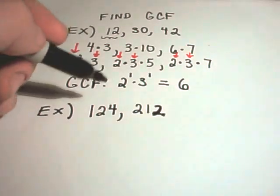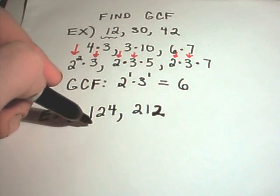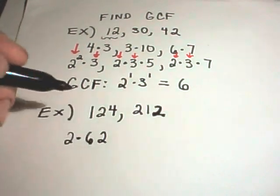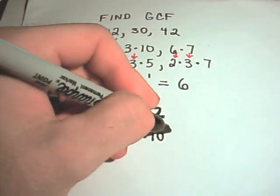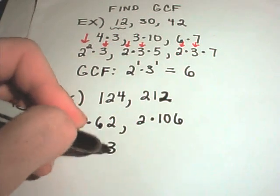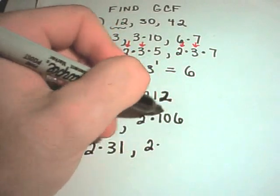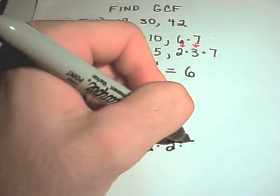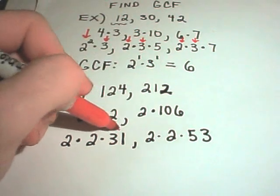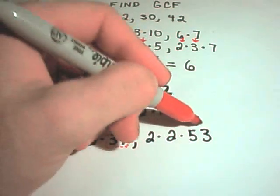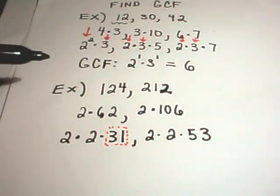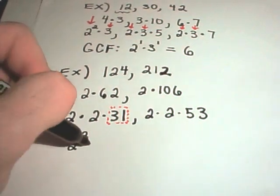Now what if we have bigger numbers? The arithmetic gets a little harder. I'm going to do the same thing and start factoring. I notice 124 is even, so I can write that as 2 times 62. 212 is also even, so I can write that as 2 times 106. I can break 62 down again as 2 times 31, and 106 as 2 times 53. At this point I can stop — 31 is a prime number, so I can't break it down further. This gives me 124 = 2 squared times 31, and 212 = 2 squared times 53.